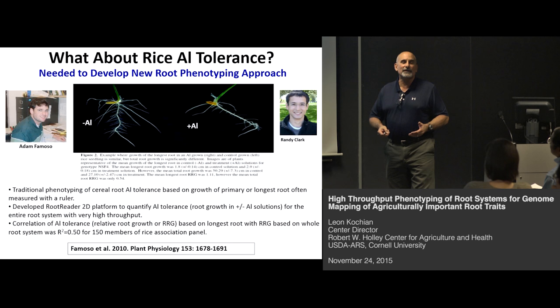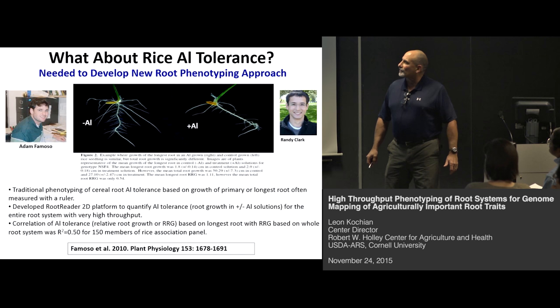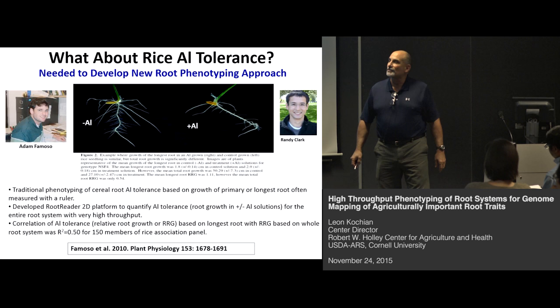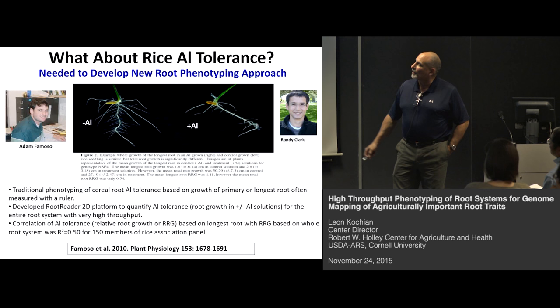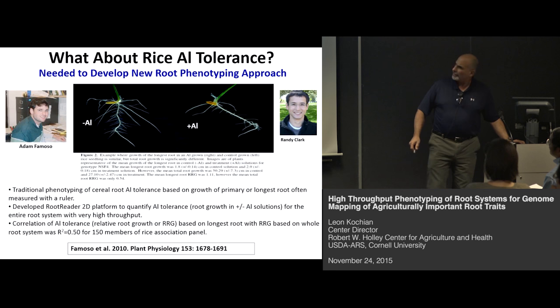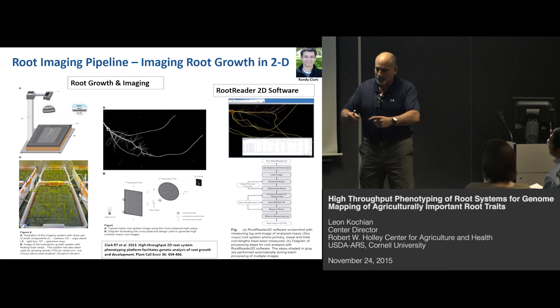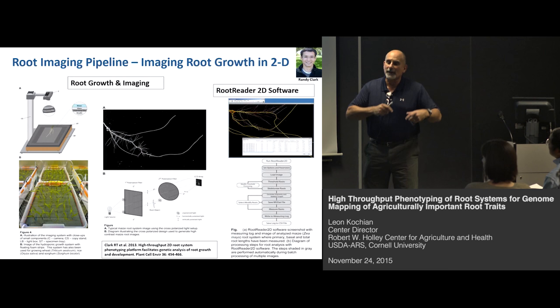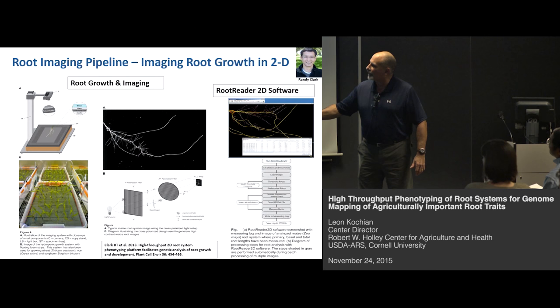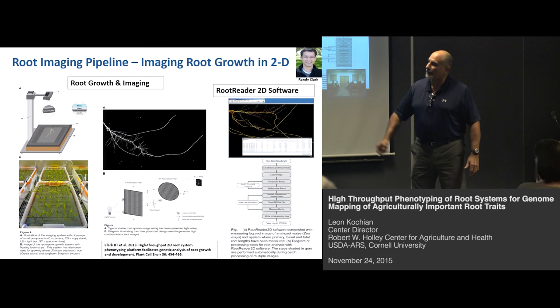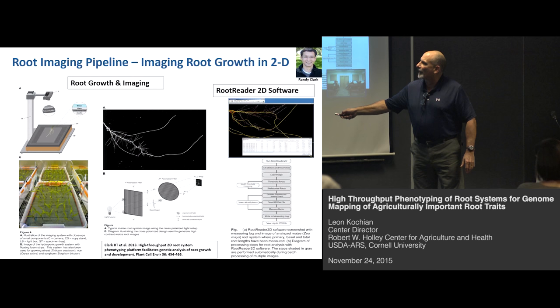Randy Clark, a really smart graduate student who started as an undergraduate in biological engineering and then got his PhD here, started our root imaging work. This is our Root Reader 2D system. We grow plants hydroponically in little floating foams so we can easily take them out and image the roots and put them back, following root growth over time. We use a light box stand with a polarized filter, and another polarizing filter at the camera at right angles, which maximizes contrast between the white root and black background to get good image quality.